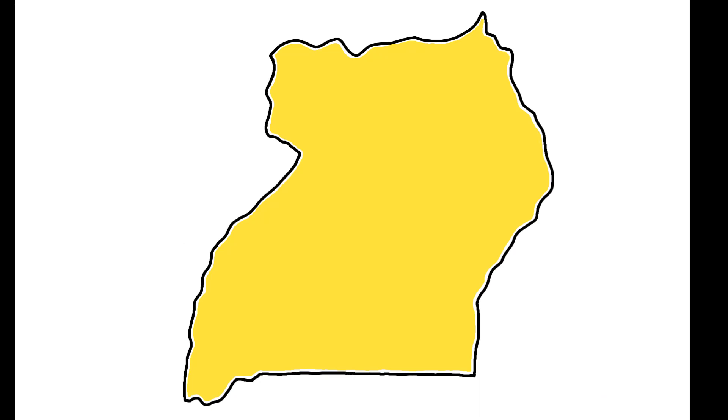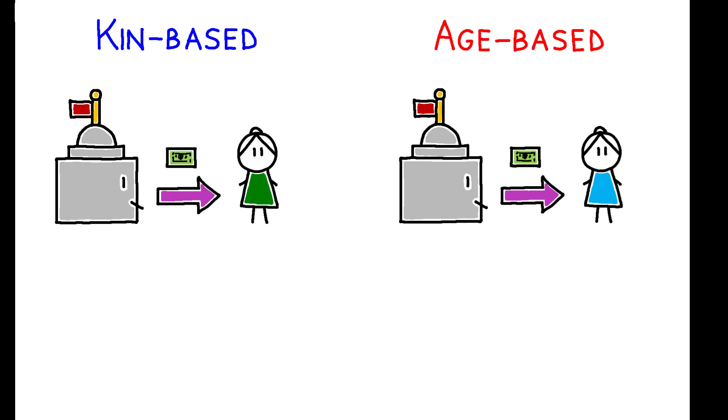These same dynamics appear when the analysis is expanded to a national policy program. In 2011, Uganda introduced a social pension program targeting individuals aged 65 and older. One of the explicit goals was to improve the well-being of children, as policymakers believed that pension recipients would invest part of the transfer in their grandchildren. But, mirroring the results in Kenya, household exposure to the pension program improved child nutrition in kin-based societies while having no effect in age-set societies.